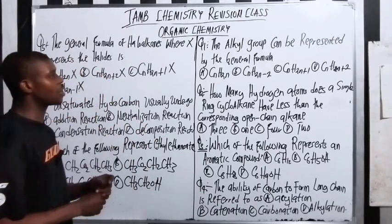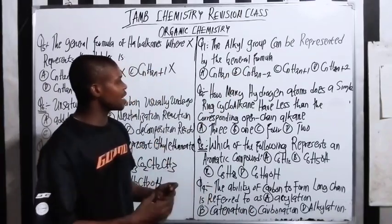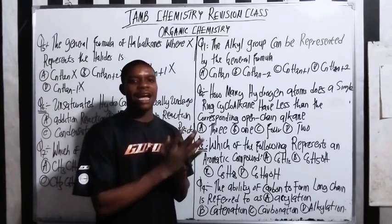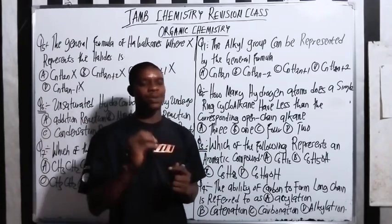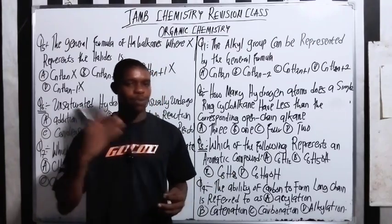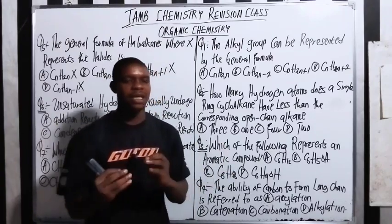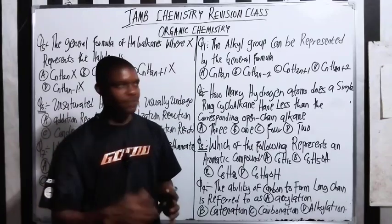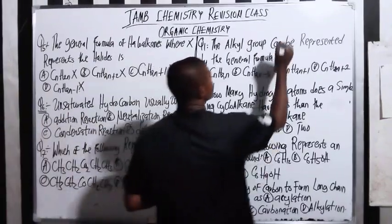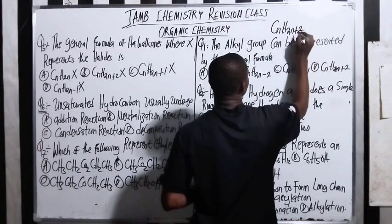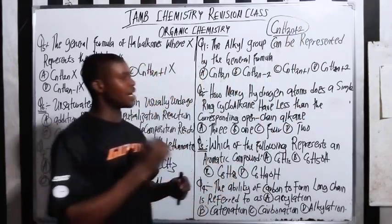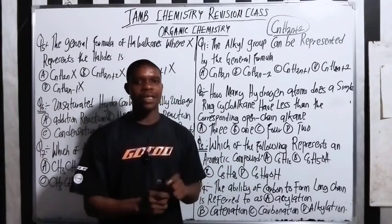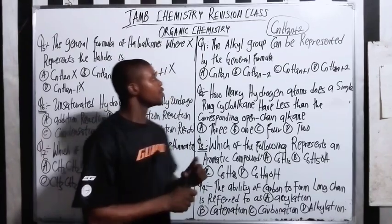Let's get into it. The first question: the alkyl group can be represented by the general formula. Now when you talk about alkyl groups, they are mainly used as a source choice — the methyl, the ethyl, the propyl, the butyl, the decyl. They have been derived from the alkanes. So the general molecular formula for the alkanes is CnH2n+2.